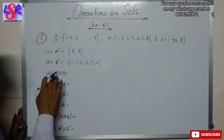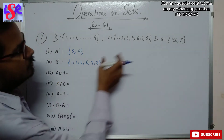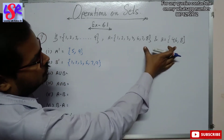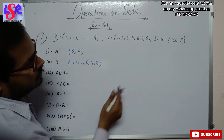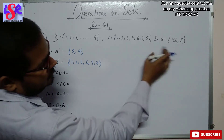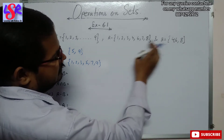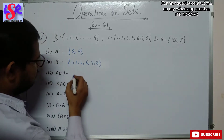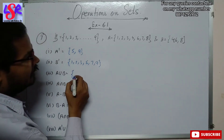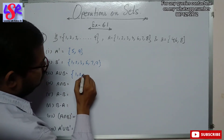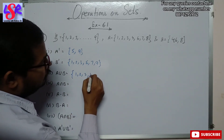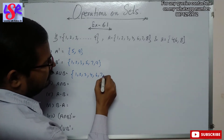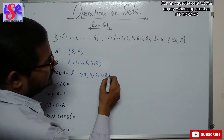Then we have A union B, which means we write all of them together. Since 4, 6 and 8 are already there in A, A union B will just be the set A itself: 1, 2, 3, 4, 6, 7 and 8.